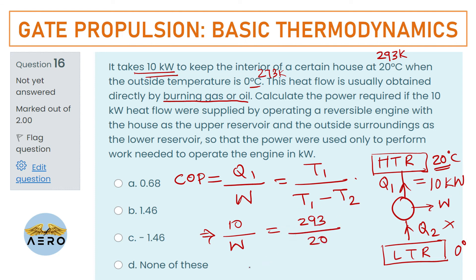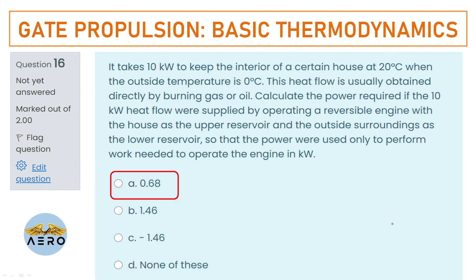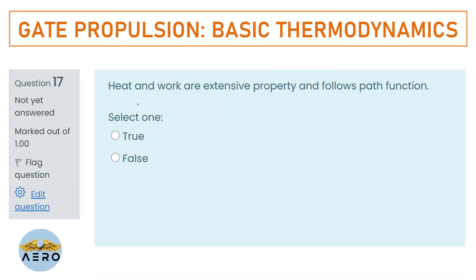Resolving: 200/293 gives approximately 0.68 kW. The right option is option B.